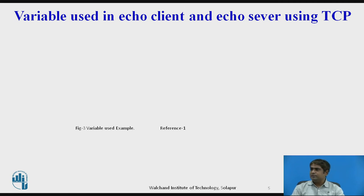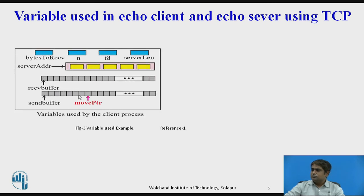Here are the variables used in the ECO client and ECO server using TCP. The variables used by the client process include: bytes to receive, N, file descriptor, server length, server address length, receive buffer, send buffer, and a pointer to the start of the buffer as well as a moving pointer toward the send buffer.